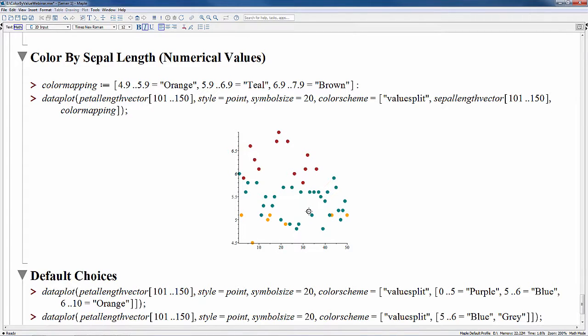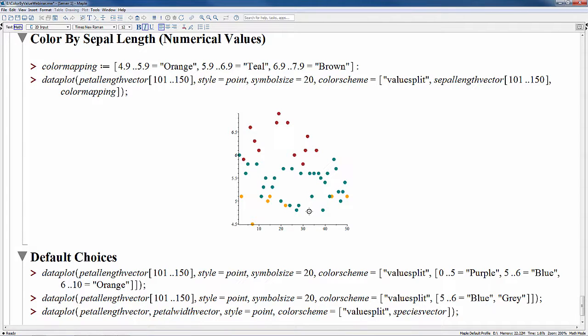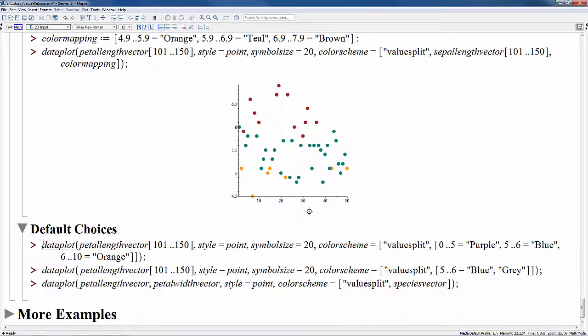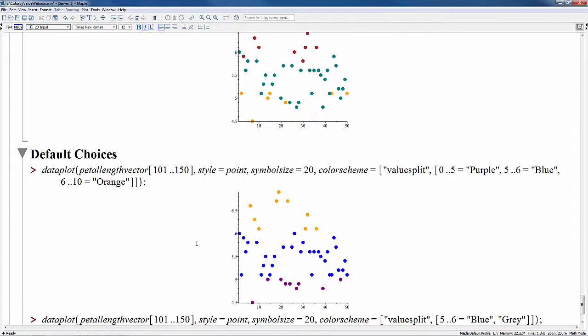Now you don't have to fully specify your mapping and data values to color by as Maple can make certain choices for you. So in this first example, you see that we have only two arguments here in this list. The mapping is provided but the vector that we normally color by is missing. So in this case, Maple just uses the plotted data itself for that purpose and it just colors by the petal length in this case.